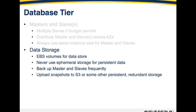In terms of data storage, if you're using AWS, we recommend using EBS volumes for your data store. Regardless of the cloud you're using, never use ephemeral, local, or transient storage for your persistent data — if that instance goes down, you'd lose that data as well. We recommend backing up the master and slaves frequently. The RightScale server templates backup the master every four hours and every slave every hour, with configurable intervals. We also recommend uploading these snapshots to S3, or your cloud's equivalent persistent redundant storage, to allow both backups and recoveries of your database.